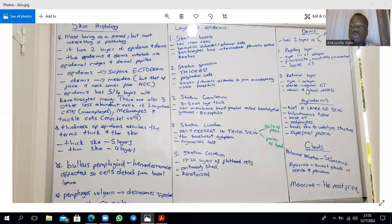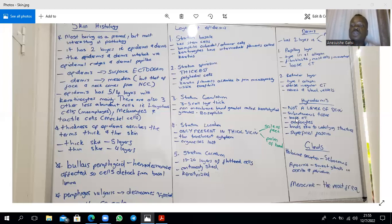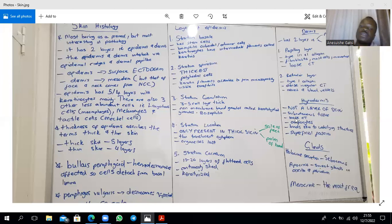Below all this you find the hypodermis, which is not a layer of skin per se, but is basically the subcutaneous tissue — what in gross anatomy you call the superficial fascia. It is loose connective tissue typified mostly by adipocytes, and it binds the skin to some of the underlying structures.